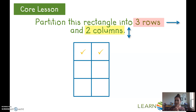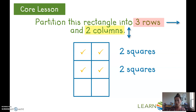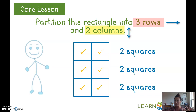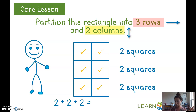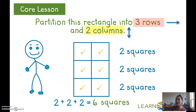Let's see how many squares we made: two squares, two squares, and two more squares — two, four, six. Two plus two plus two is six. We made a rectangle into six squares.